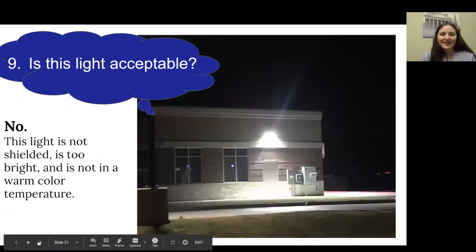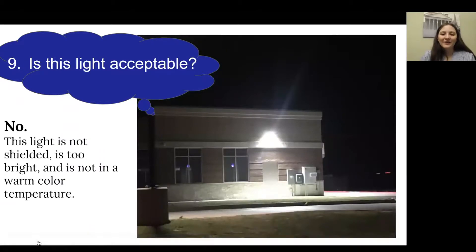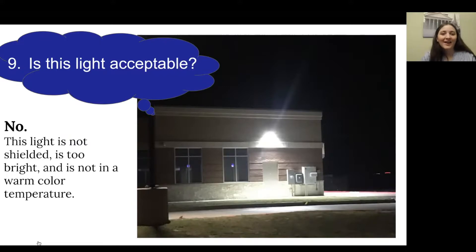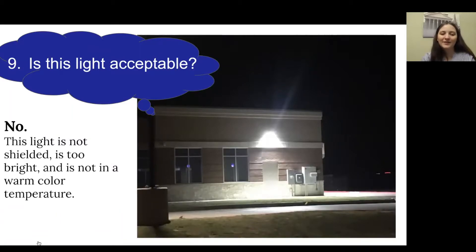Number nine: no, it is not acceptable. This light does serve a purpose — we can see that door right below it — but we definitely want to shield it. Right now it's creating a lot of glare, and as we've learned, that glare is not safe. We want to shield it so it is pointing down at the door instead of up into the sky. It is also a very bright white light, so we want to make sure it is a warm color temperature so that anyone working there, as well as plants and animals, aren't exposed to so much blue light.